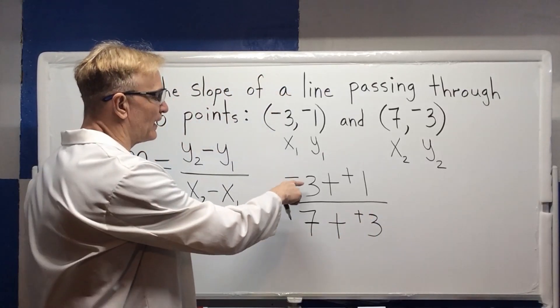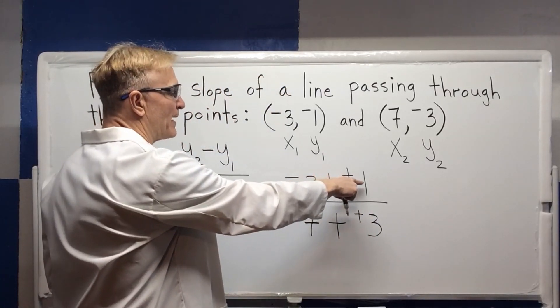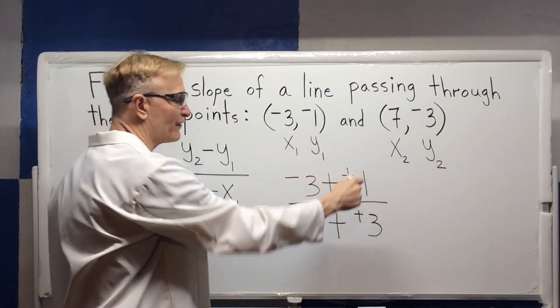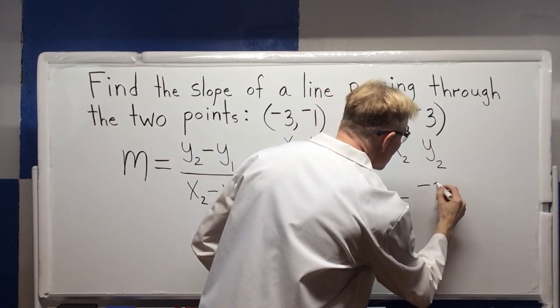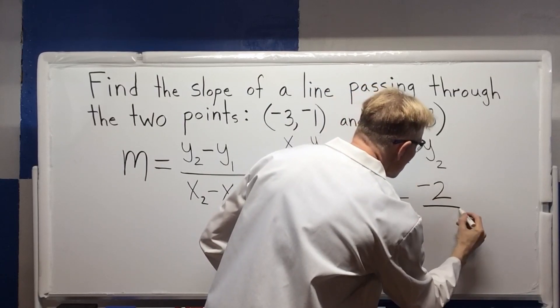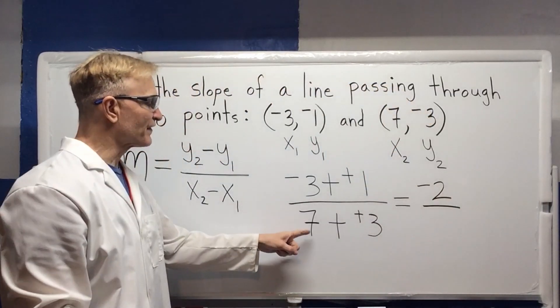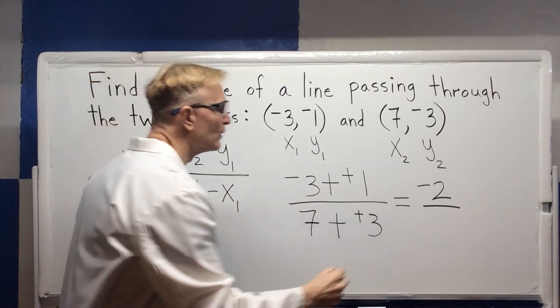Now we do the math. I owe 3, I pay back 1, we're going to be negative 2 on top. I have 7 plus 3, which is 10.